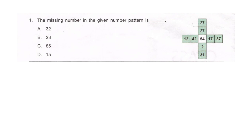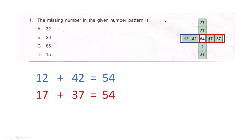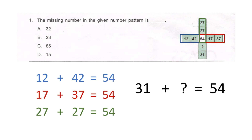Let's look at it together. In the first block, 12 plus 42 gives 54. Similarly, in the second block, 17 and 37 sum up to 54. The third block: 27 plus 27 is 54. Hence, in the last block, 31 plus the missing number equals 54, so the missing number is 23. Our answer is option B.